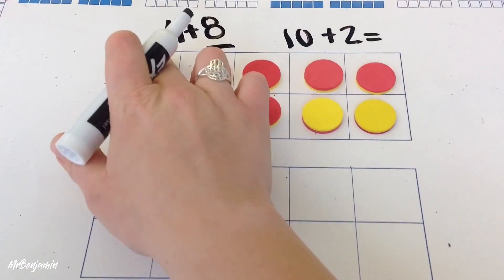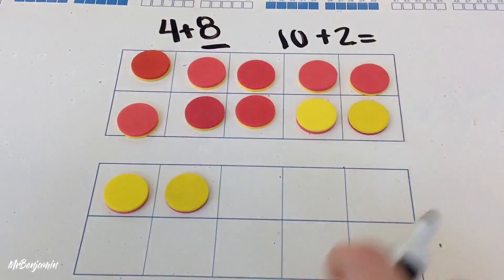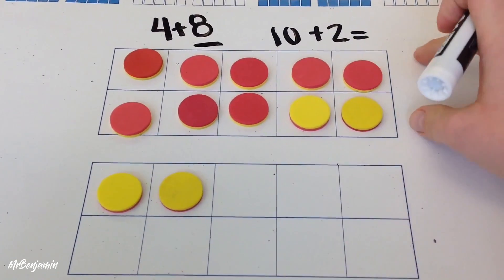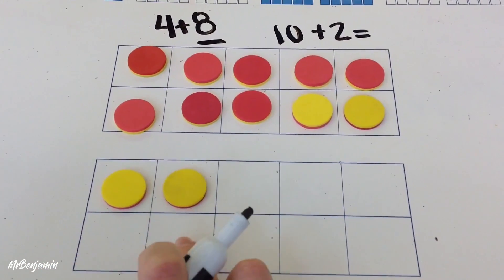And I don't have to start from 1, 2, 3, 4, 5, 6, 7, 8, 9, 10. I can just say 10, 11, 12.